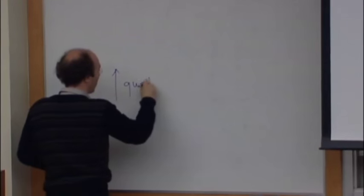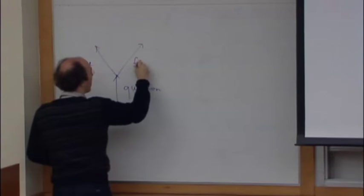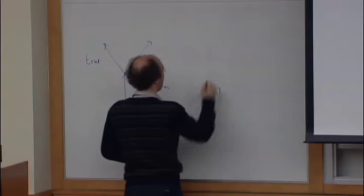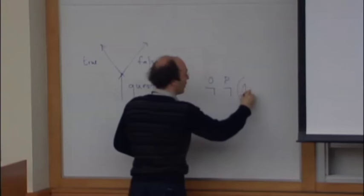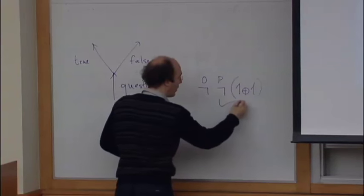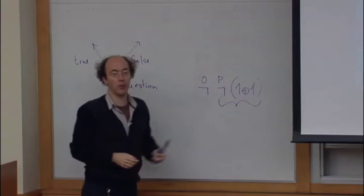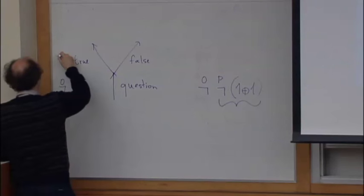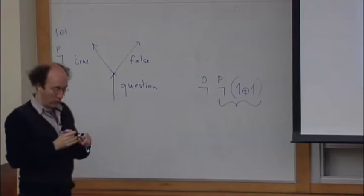The Boolean game is like this: the first move is the first negation — an opponent negation. Then the second move is a player negation, and the fact that we have two moves here corresponds to the fact that we have 1 plus 1. What is important is the depth: the first negation, the second negation, and then 1 plus 1.